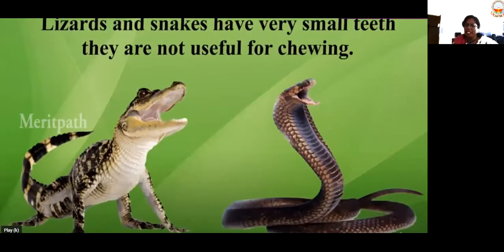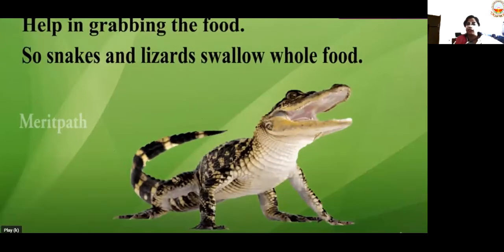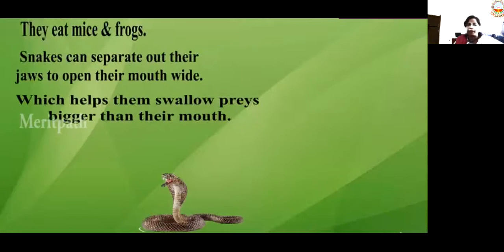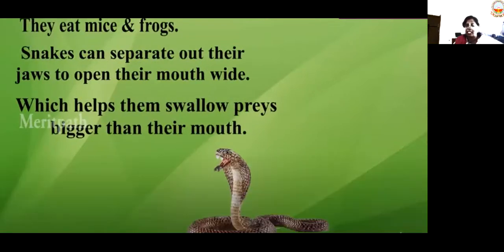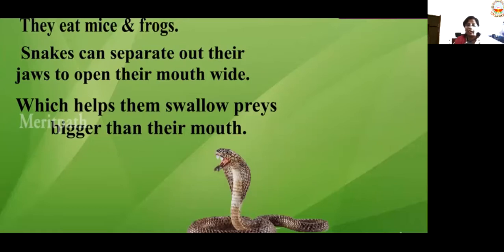Lizards and snakes have very small teeth which are not useful for chewing. So they just grab their food and swallow the whole food, and it gets digested in the stomach. Snakes eat mice and frogs. Snakes can separate out their jaws to open their mouth wide, which helps them to swallow prey bigger than their mouth. They just open it, grab it, and push the prey inside their stomach.